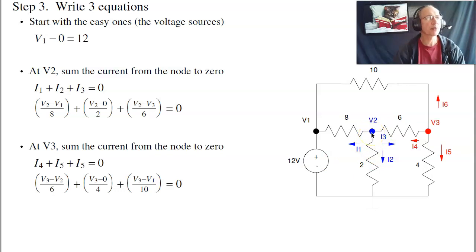Next let's go to V2. I'm going to sum the current from the node. Current left plus the current down plus the current right has to add to zero. Or I1 plus I2 plus I3 equals zero. I1 is just V2 minus V1 over 8. I2 is V2 minus 0 over 2. V3, or I3, is V2 minus V3 over 6. Gives you this equation.